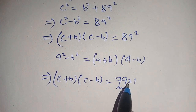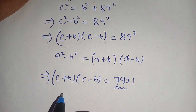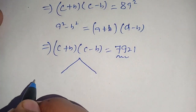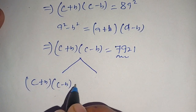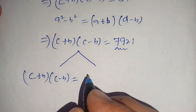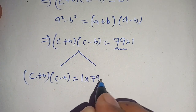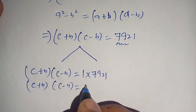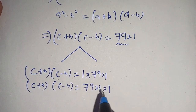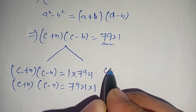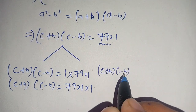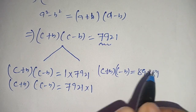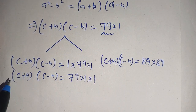We can break down 7921 into two cases. We can write (c + b)(c − b) = 7921 as either 1 times 7921, or as 7921 times 1, or as 89 times 89.